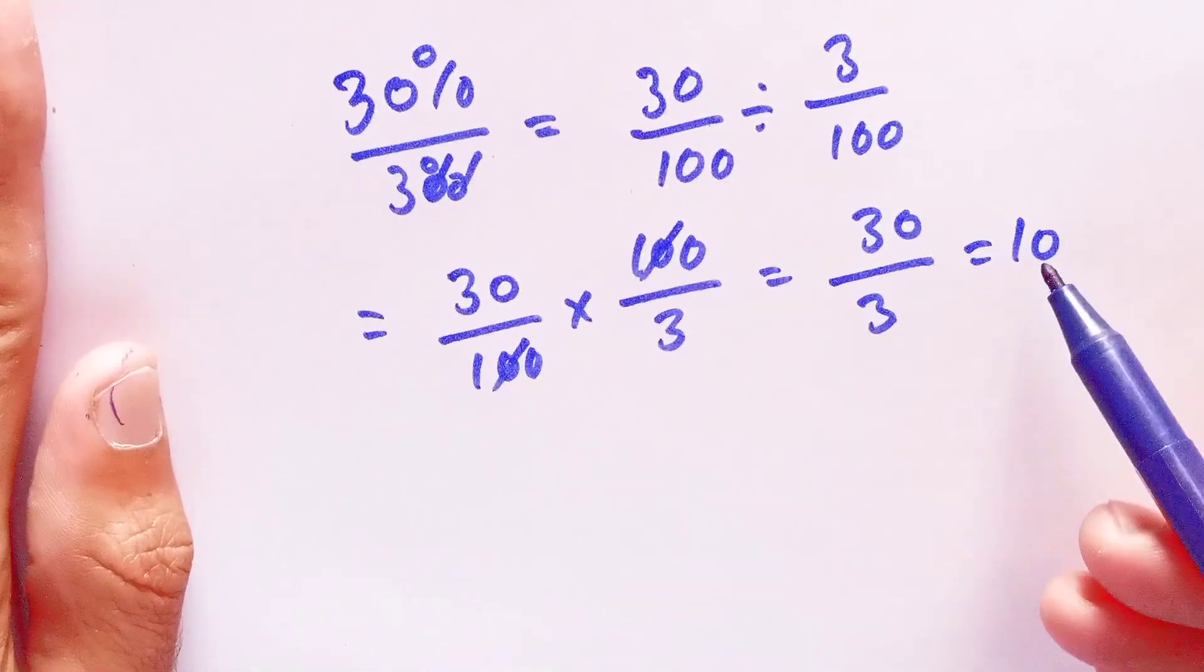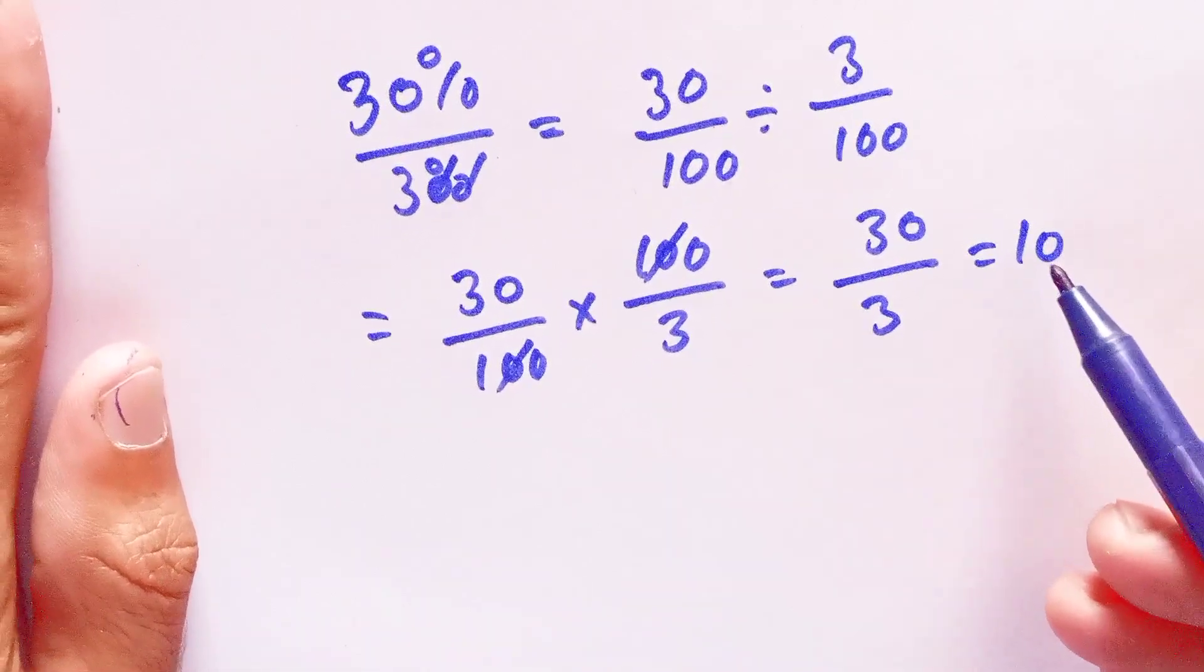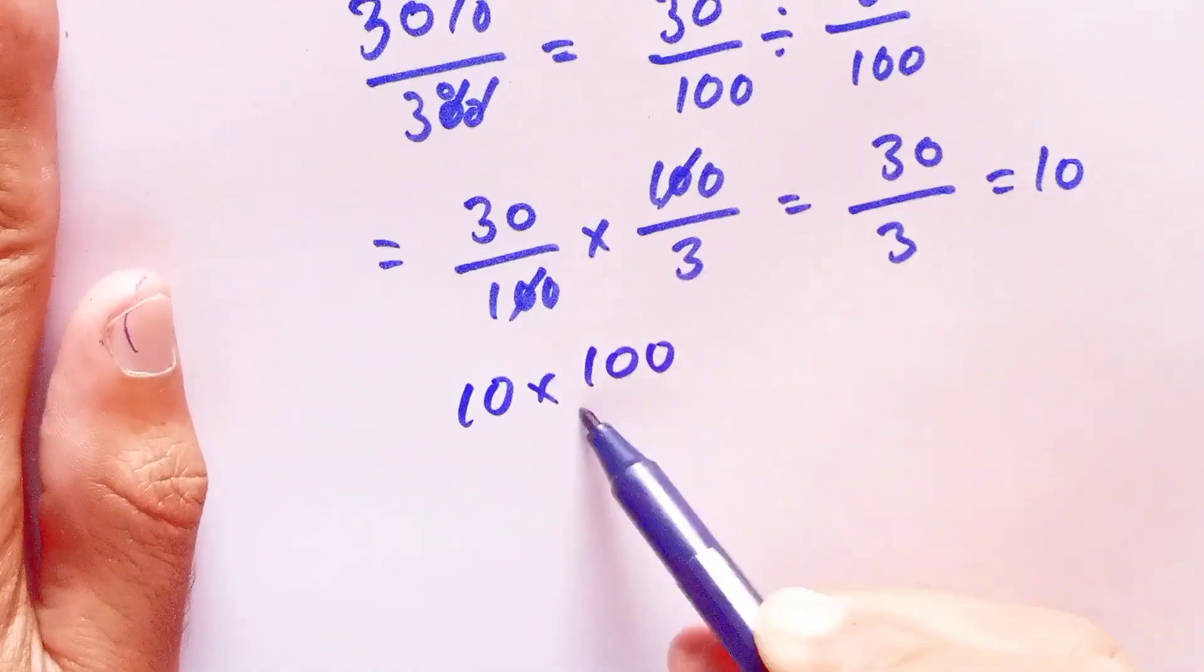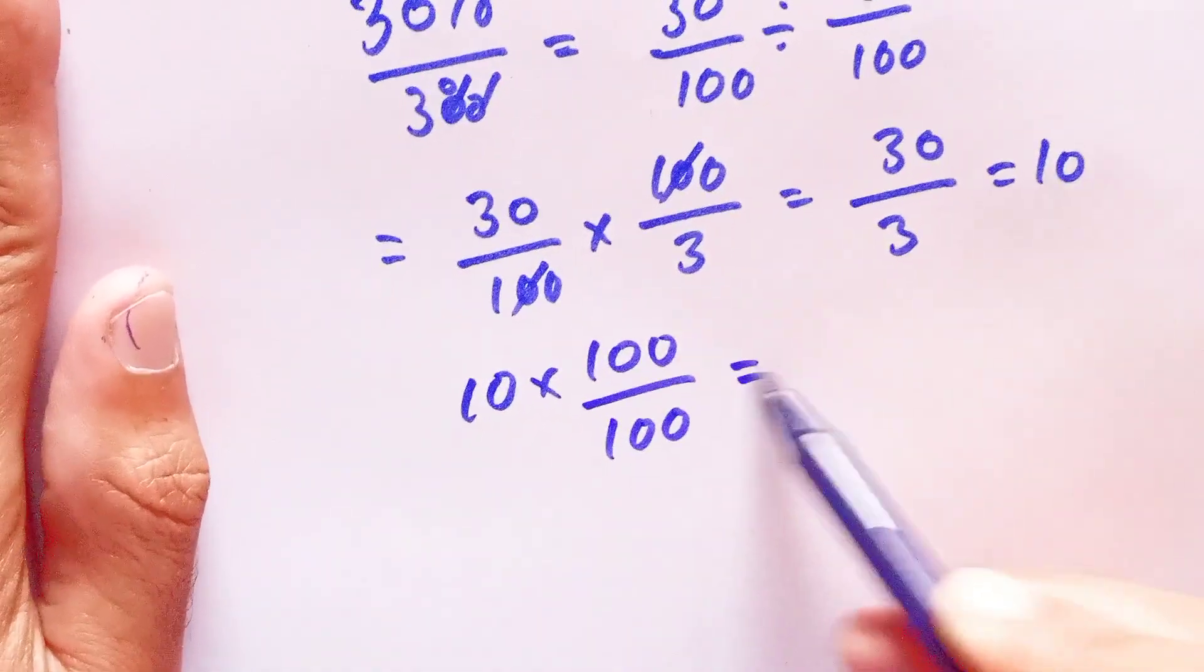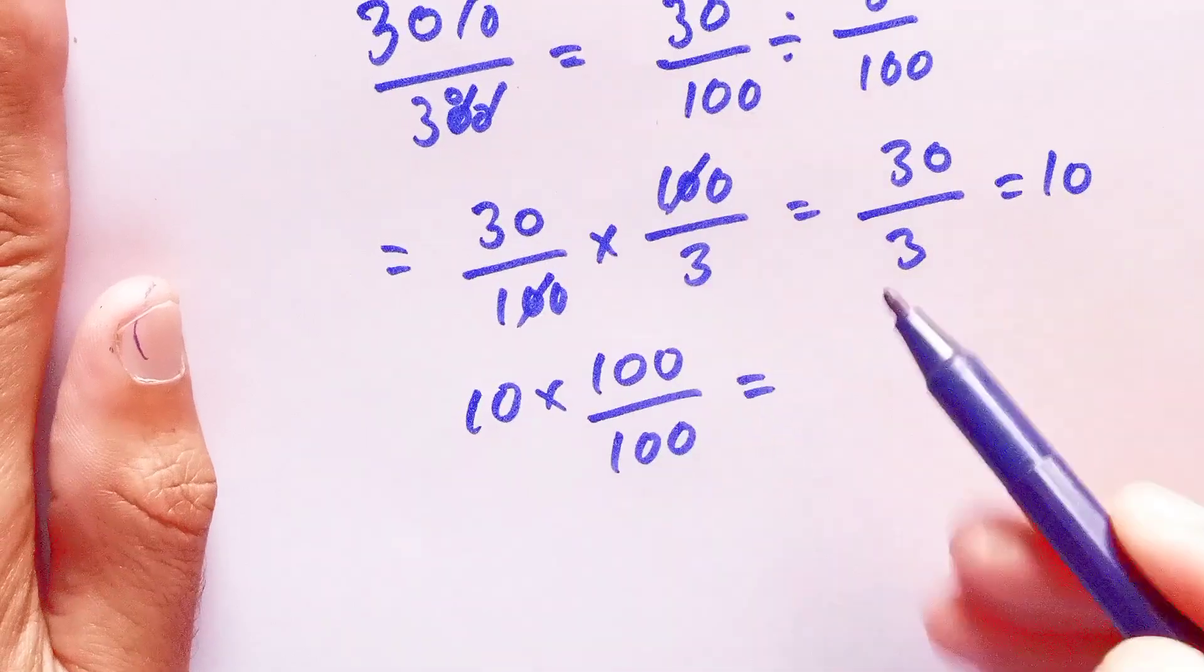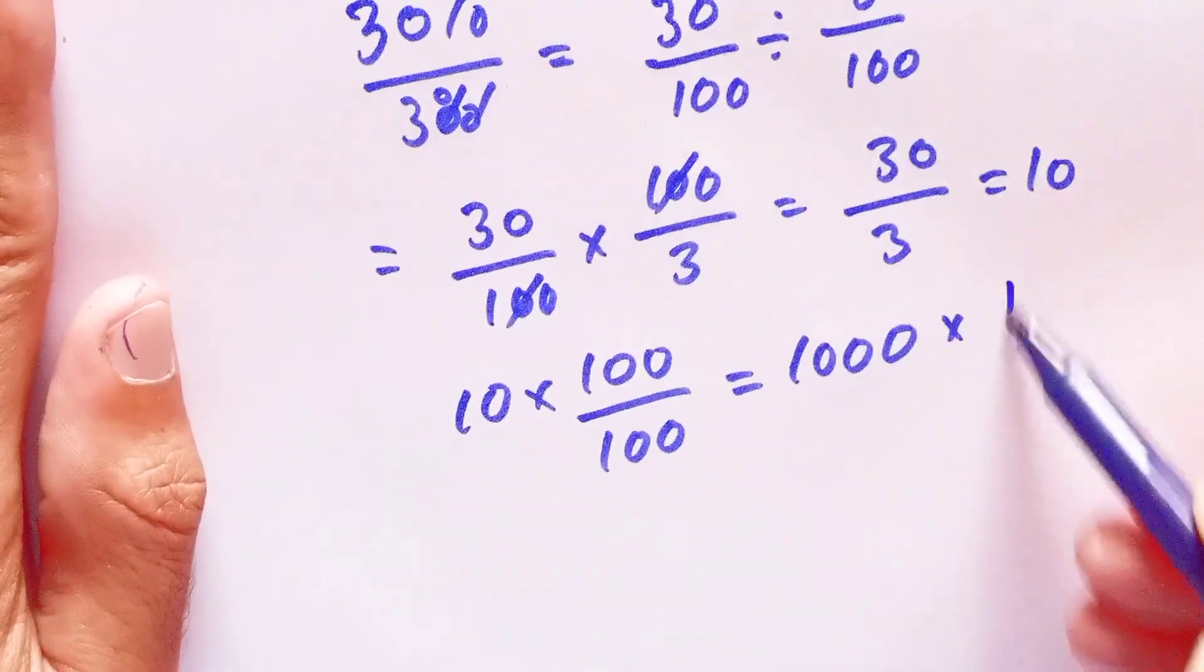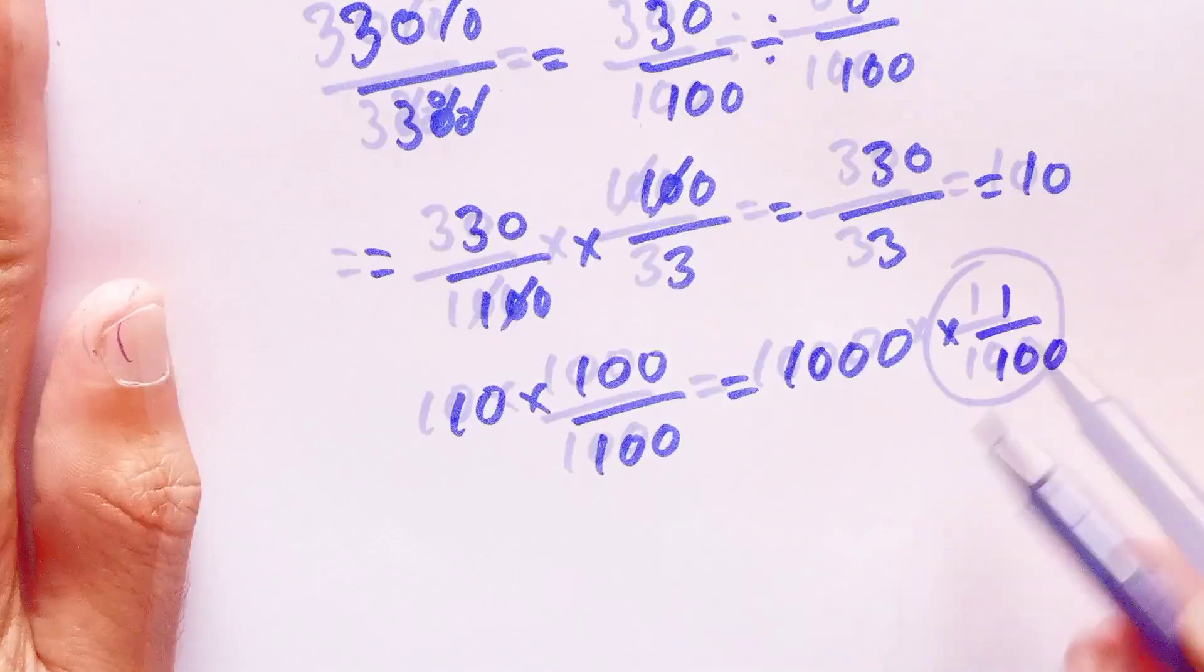To convert this to percentage, we will multiply and divide it by 100. So 10 multiplied by 100 divided by 100, which is equal to 10 times 100 equals 1000 multiplied by 1 over 100.